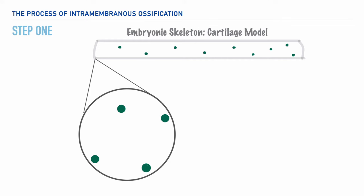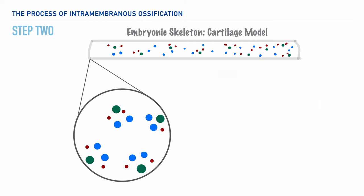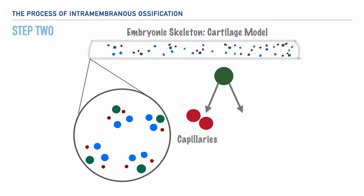In the cartilage, we begin with mesenchymal cells which gather together. These mesenchymal cells then differentiate into specific connective tissues — some differentiate into capillaries, and others become osteogenic cells. Osteogenic cells are the precursor cells, meaning that they ultimately become bone cells.